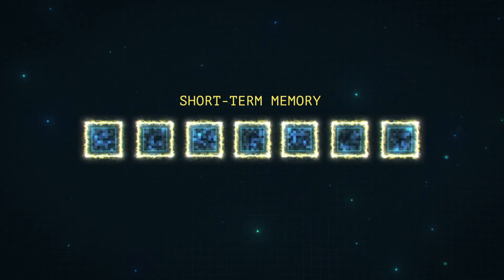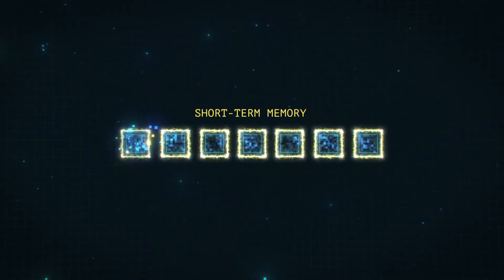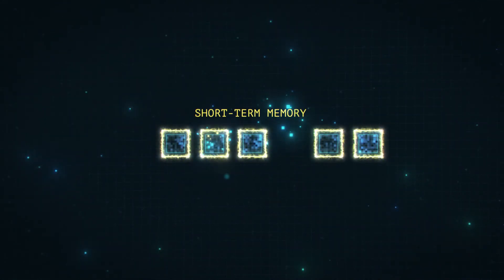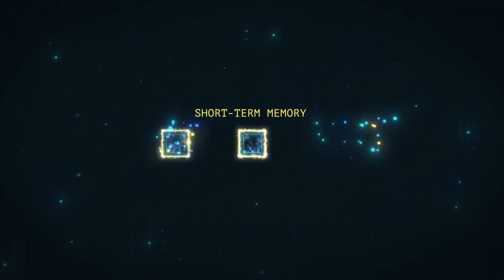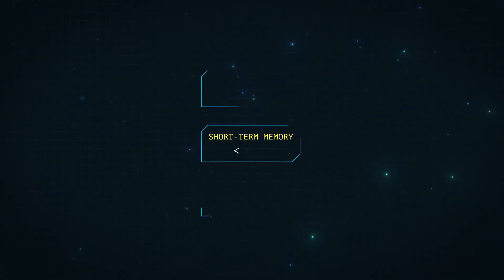This type of memory stores around seven items of information. The information that reaches short-term memory disappears from existence very quickly if there is no conscious effort to retain it into long-term memory.